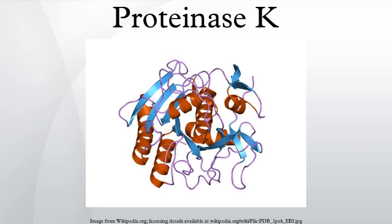Proteinase-K activity in commonly used buffers. Applications: Proteinase-K is commonly used in molecular biology to digest protein and remove contamination from preparations of nucleic acid. Addition of Proteinase-K to nucleic acid preparations rapidly inactivates nucleases that might otherwise degrade the DNA or RNA during purification. It is highly suited to this application since the enzyme is active in the presence of chemicals that denature proteins, such as SDS and urea, chelating agents such as EDTA, sulfhydryl reagents, as well as trypsin or chymotrypsin inhibitors.